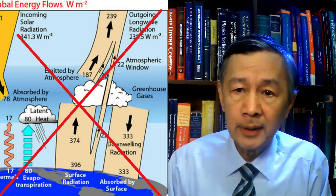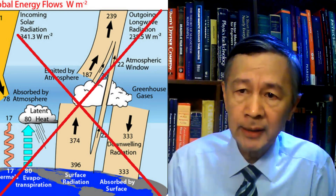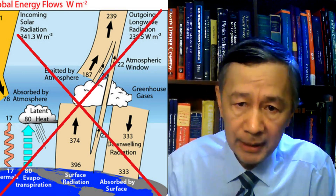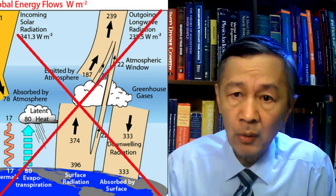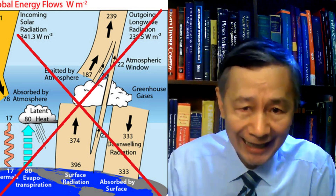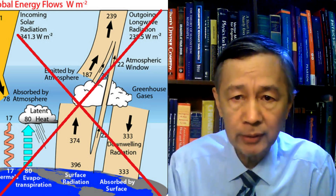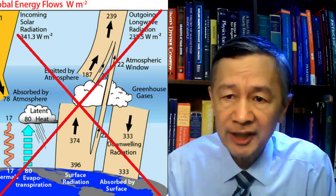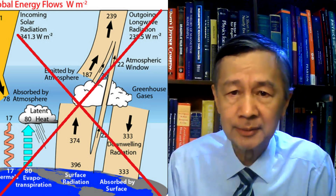In summary, the global energy budget promoted by the IPCC is not based on natural law. Instead, it is driven by demand. In particular, the downward or back infrared radiation by the trace gases is not real, simply because it cannot be cashed out. Thank you for watching, thank you for making comments and a donation, and see you next time.